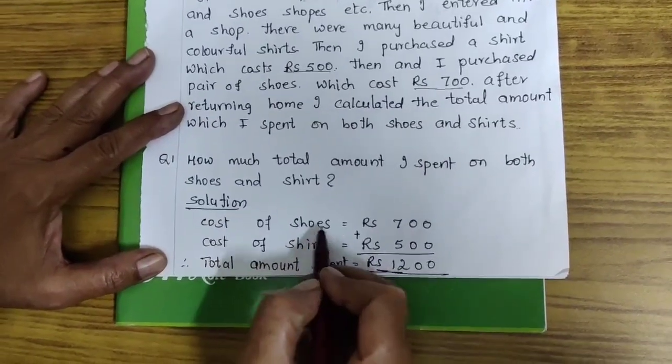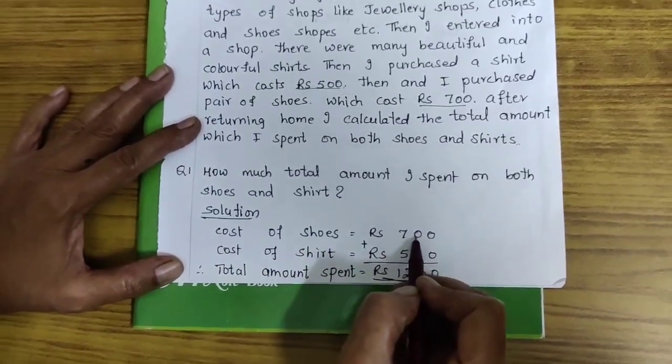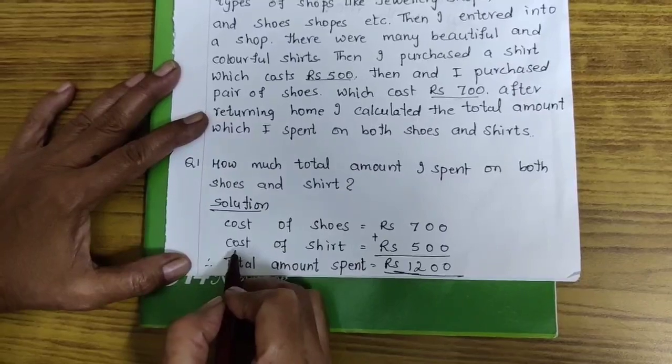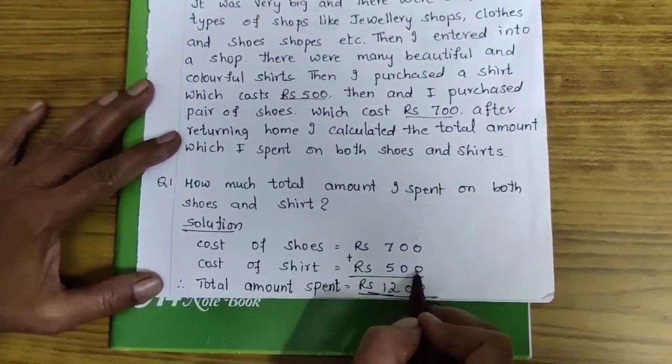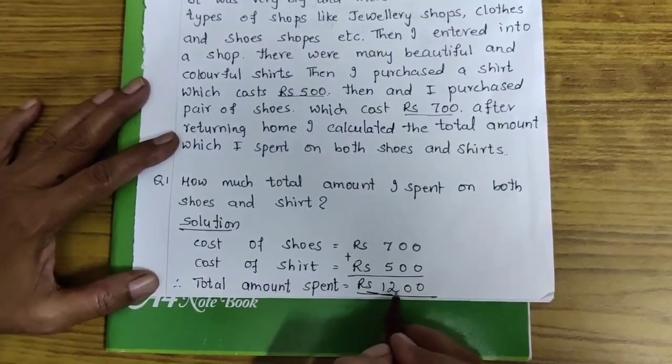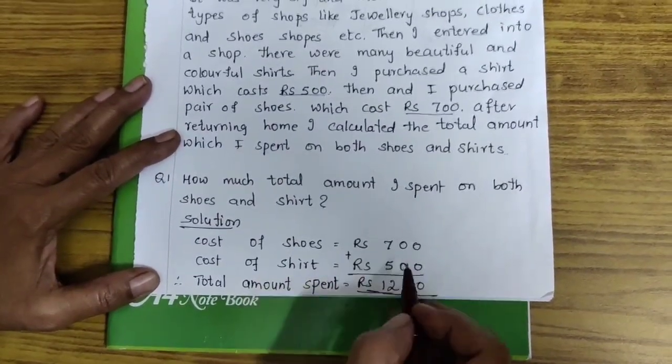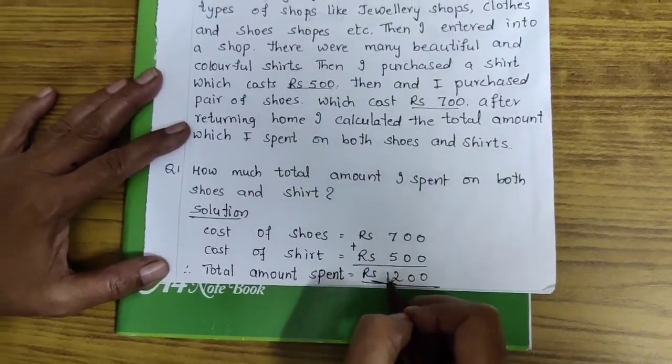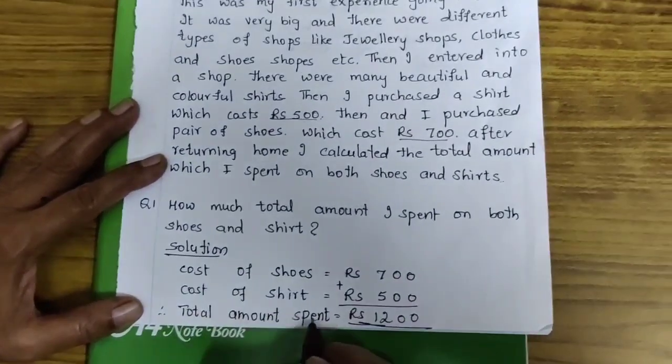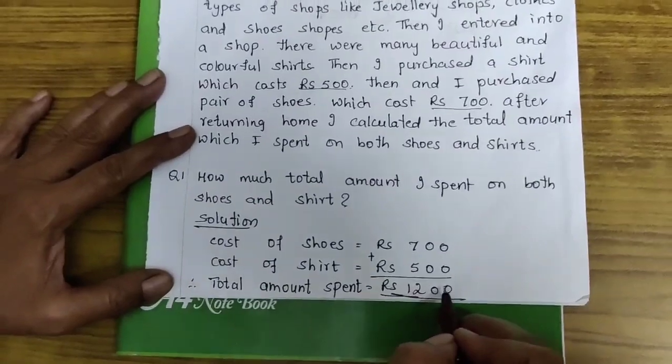Cost of shoes is equal to Rs. 700. Cost of shirt is equal to Rs. 500. How much total amount I spent children? We have to add here. 0 plus 0, 0 plus 0, 7 plus 5 is 12. Total amount I spent Rs. 1,200.